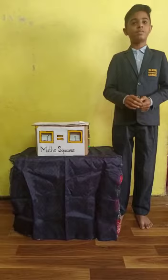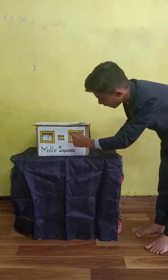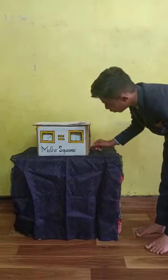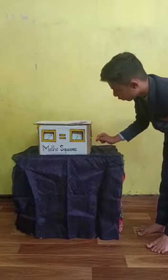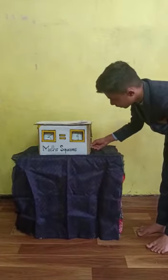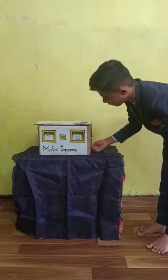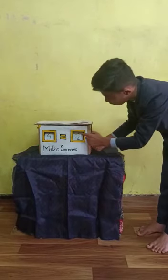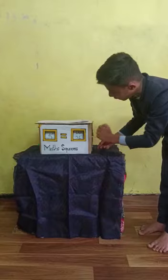Let me take an example. 1 squared is equal to 1. 2 squared is equal to 4. 3 squared is equal to 9. 4 squared is equal to 16. 5 squared is equal to 25.